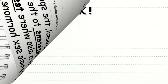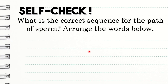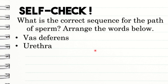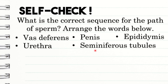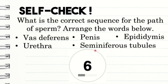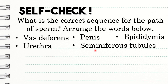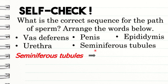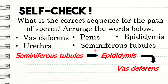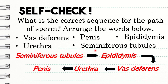Did you get it? Now let's have a self-check. What is the correct sequence for the path of sperm? Arrange these words shown on your screen: vas deferens, urethra, penis, seminiferous tubules, epididymis. You have 10 seconds. Here are the answers. First, seminiferous tubules, followed by epididymis, followed by vas deferens, next is urethra, and lastly, the penis. Did you get it correct, class?